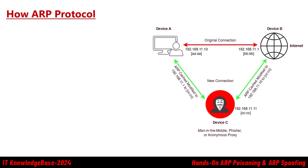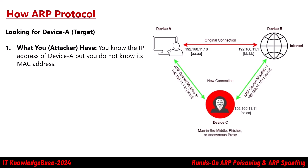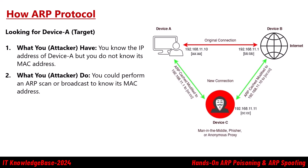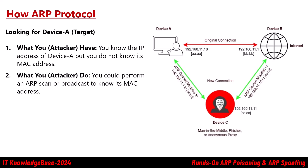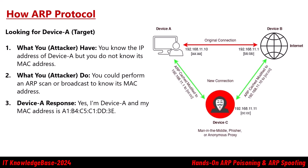How does the ARP protocol work from the attacker's perspective? You know Device A's IP address but not its MAC address. You can perform an ARP scan or broadcast to discover its MAC address. Device A will respond: 'Yes, I am Device A and this is my MAC address.' To make things easy, you store Device A's MAC address in an ARP cache so next time you want to contact Device A, you don't need to request the MAC address again.